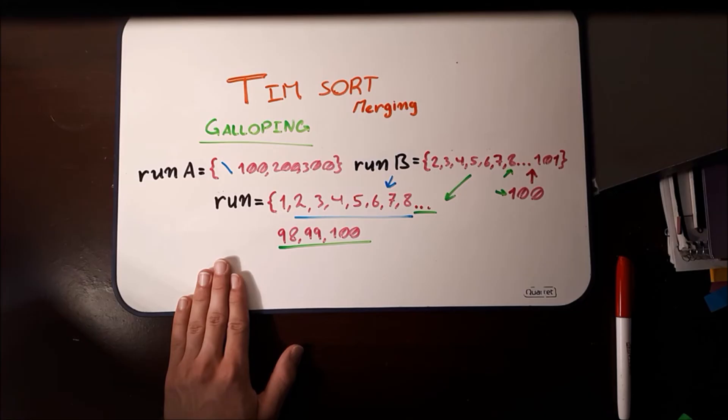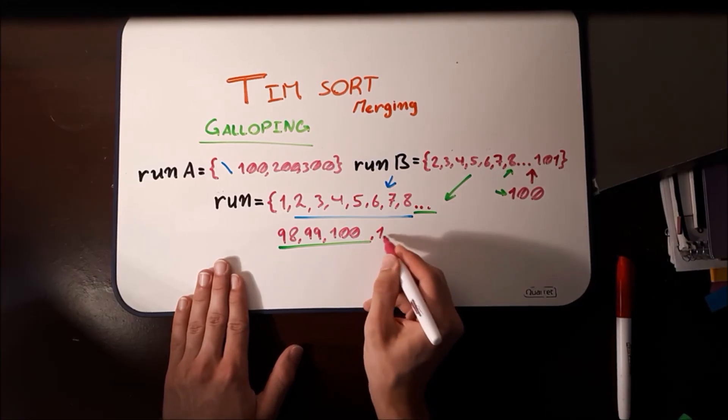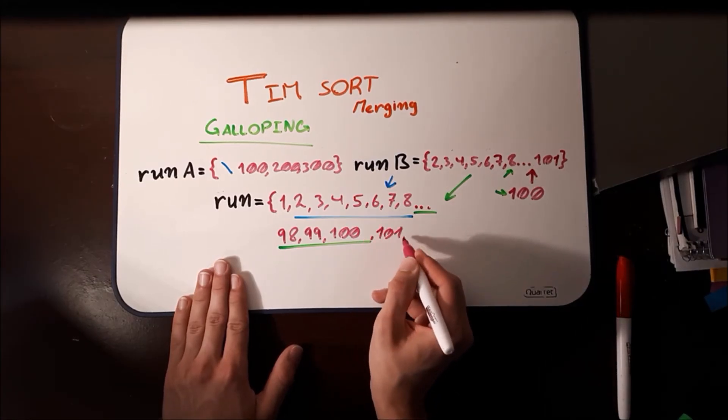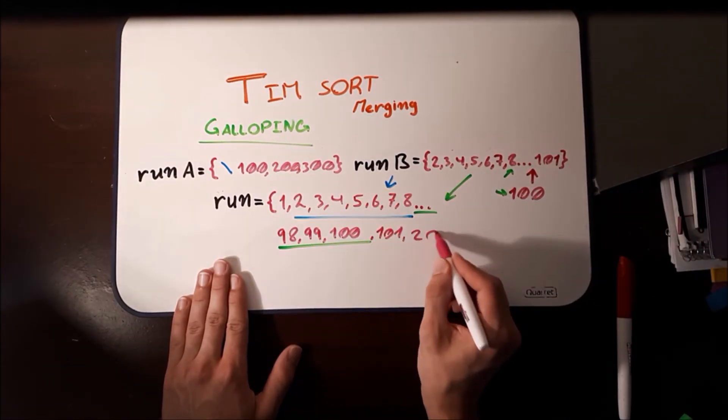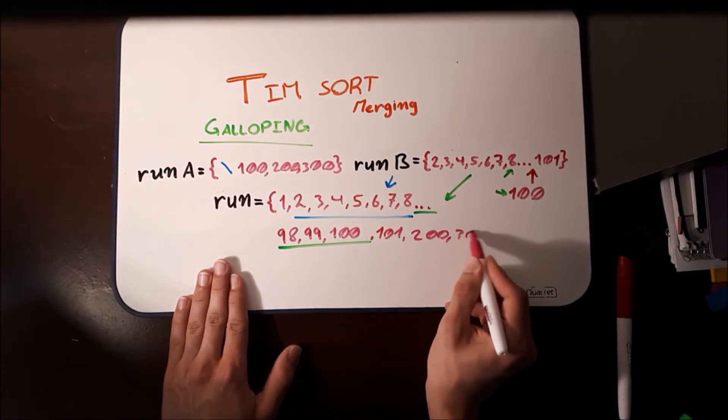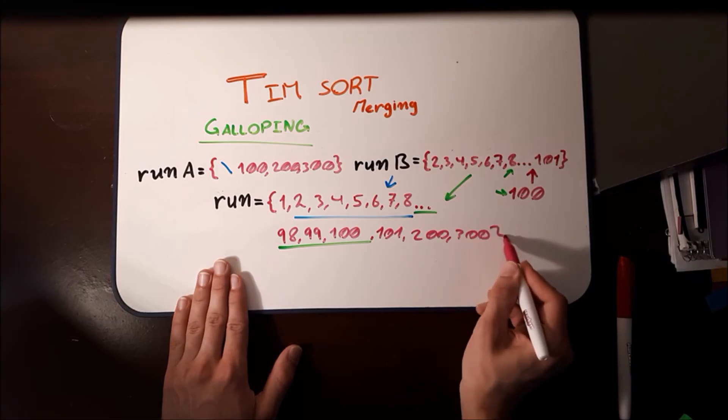So now it inserts 101. Then, because that's all that there is left here, it directly copies 200 and 300. And that is your final run.